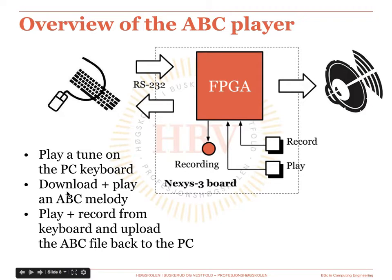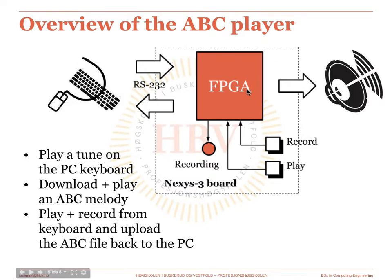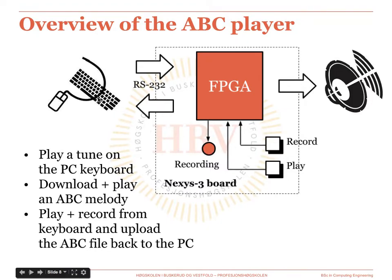Stage two is a bit more ambitious and addresses the possibility of downloading a full tune in the form of an ABC text file, which will be stored in the local FPGA memory and played from beginning to end when the play button is pressed. This is the objective set for week two of this assignment. Stage three is the most complex and addresses the possibilities of playing but also recording the tune that was played. When the record button is pressed, the LED will switch on and all the keys pressed from that moment on will be recorded in the local FPGA memory as the corresponding notes are played.